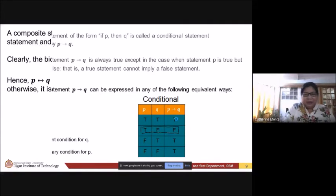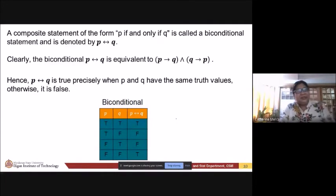Now, we have your biconditional. A biconditional is a composite statement of the form P if and only if Q. That is equivalent to this. Equivalent to this one. Remember, paano na siya magiging equivalent? If they have the same truth table.